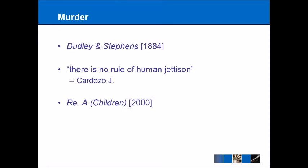Perhaps the most common use of necessity as a defense is in cases of murder, and this goes back to the famous case of Dudley and Stephens 1884. The case involved people on a boat stranded at sea who decided to eat the cabin boy on the basis that they would starve otherwise. The defense of necessity failed because murder is not normally excused by necessity — you shouldn't take someone else's life to save your own. Justice Cardozo, the American judge, pointed out there is no rule of human jettison.